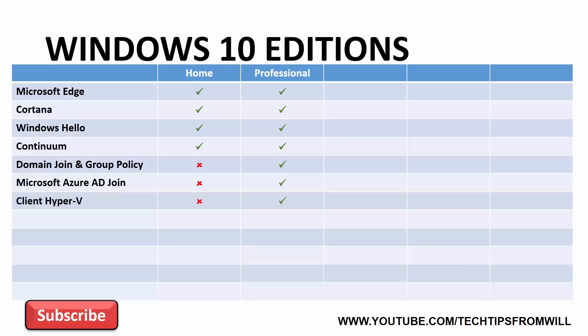Next is support for Client Hyper-V. Client Hyper-V is essentially a hypervisor which comes built into some Microsoft client operating systems. With Client Hyper-V, the administrator is able to build out virtual machines on their Windows 10 workstation. However, Client Hyper-V is only available on 64-bit versions of Windows 10. You cannot use Client Hyper-V on any 32-bit versions.